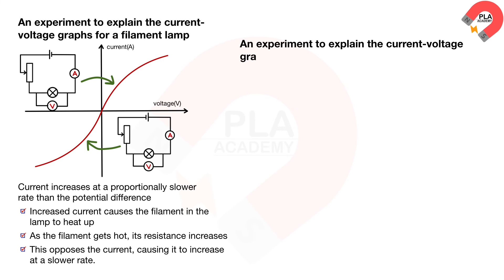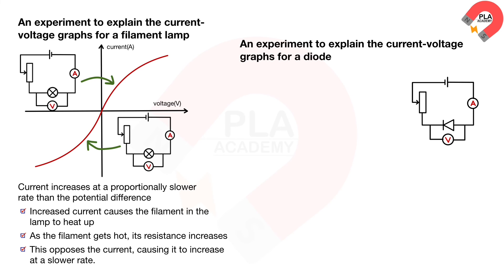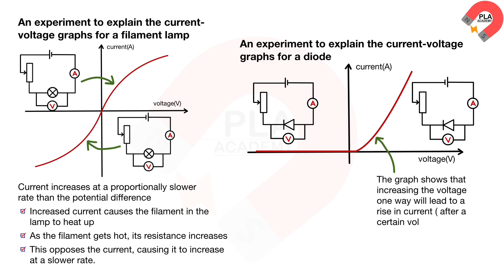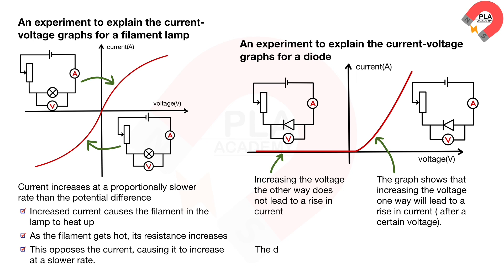An experiment to explain the current-voltage graphs for a diode. Set up the apparatus as shown on the diagram. Adjust the variable resistor to obtain different values of current. Read the voltage, or PD, at the voltmeter and the current at the ammeter. Repeat the experiment 10 times. Reverse the cell as shown on the diagram, and repeat the experiment 10 times to obtain the results. Plot the graph of current against voltage. The graph shows that increasing the voltage one way will lead to a rise in current after a certain voltage. However, increasing the voltage the other way does not lead to a rise in current. This shows that the diode only allows the current to flow in one direction.